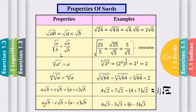Property 6: if you have A surd B minus C surd B, factorize surd B and subtract A minus C. For example, 6 surd 3 minus 3 surd 3 — factorize surd 3, and 6 minus 3 equals 3 — giving 3 surd 3.